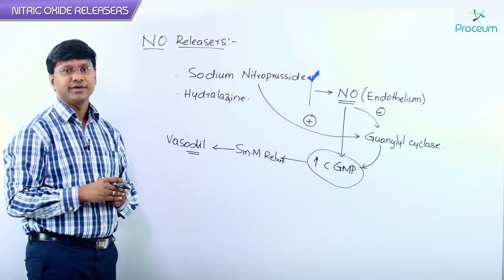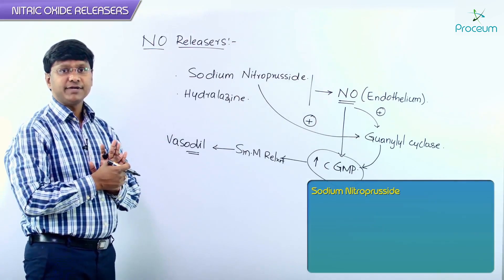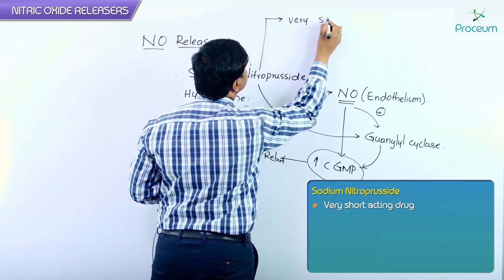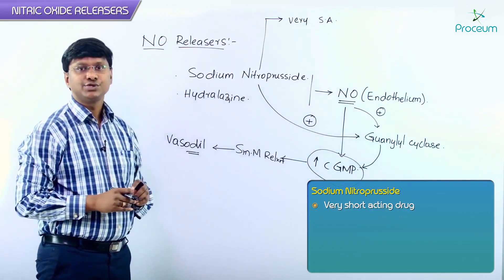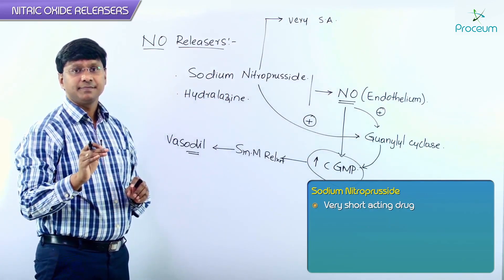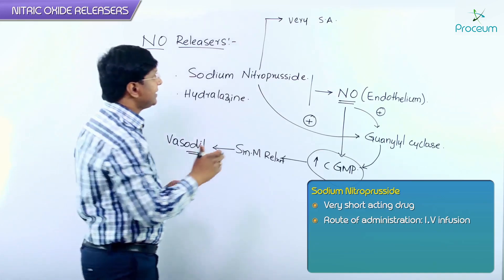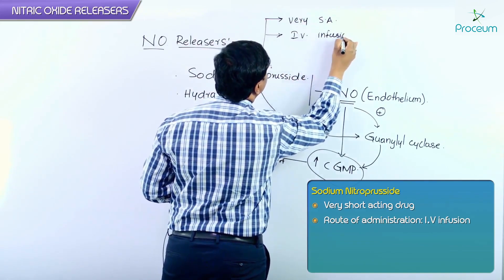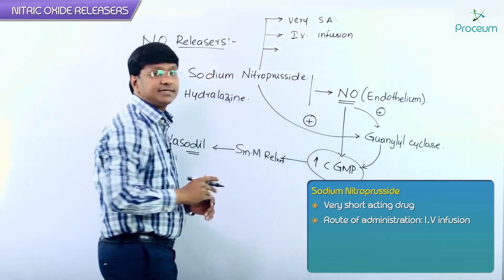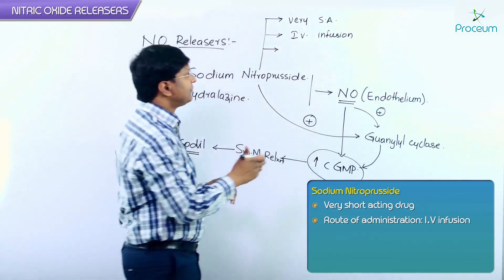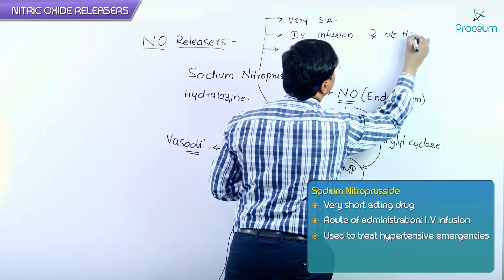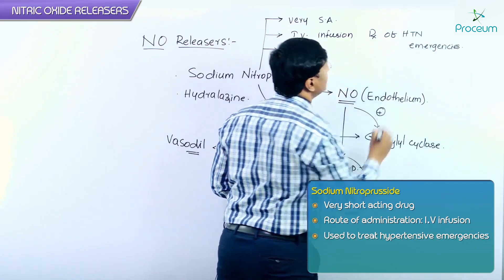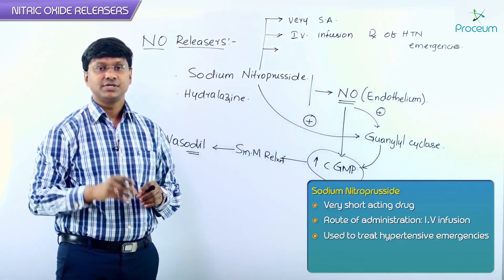Now let me discuss a few important points about sodium nitroprusside. Sodium nitroprusside is a very short-acting drug. That is the reason why it has to be administered via intravenous infusion for the treatment of hypertensive emergencies.